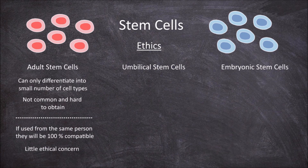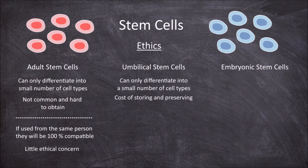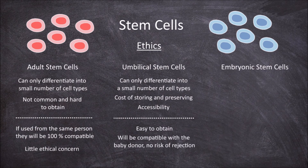Umbilical cord stem cells are derived from the umbilical cord itself. The first drawback is that they are multipotent, which limits the cell types that can be formed from them. The second drawback is that they need to be frozen and stored to be preserved, which costs money, causing issues in terms of availability and access. The benefits are that they are easy to obtain, they will be compatible with the donor baby so there is no risk of rejection by the immune system, and they do not raise much ethical concern.